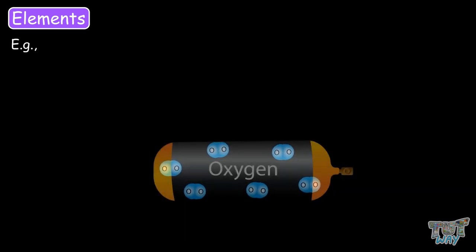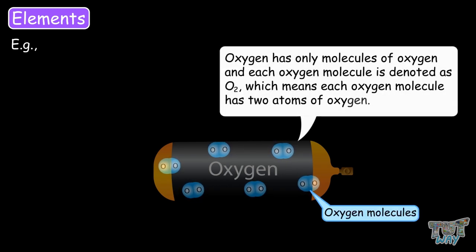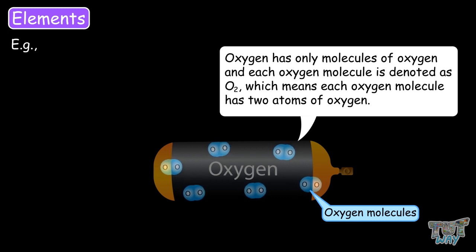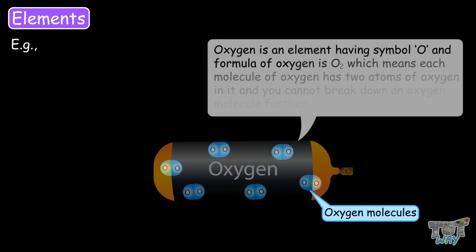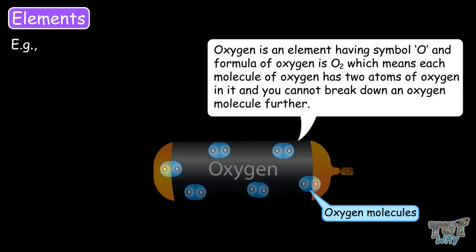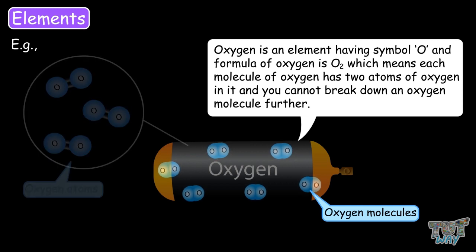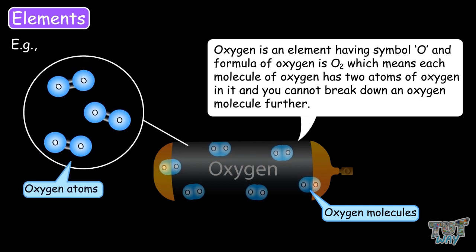For example, oxygen is made up of the element oxygen — that is, oxygen only has molecules of oxygen. Each oxygen molecule is denoted as O2, which means each oxygen molecule has two atoms of oxygen. Oxygen is an element that has the symbol O, and the formula of oxygen is O2, which means each molecule of oxygen has two atoms of oxygen in it.